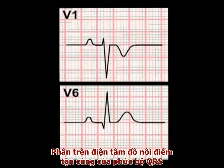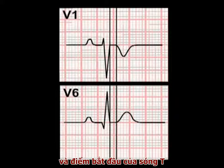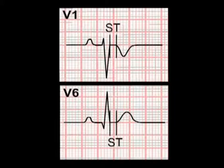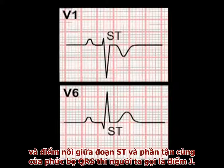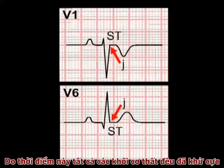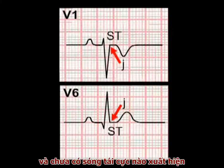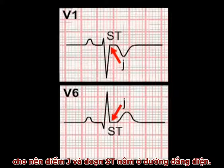The section of the ECG recording connecting the end of the QRS complex and the beginning of the T-wave is termed the S-T segment. The junction between the S-T segment and the end of the QRS complex is termed the J-point. As all of the ventricular muscle mass is depolarised at this time, there is no flow of current through the heart, and the J-point and the S-T segment should therefore lie on the isoelectric line.